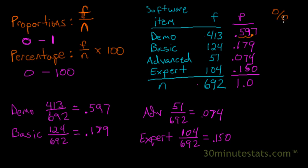So we can calculate our percentages here as 59.7% of our units sold were the demo version, almost 60%. Then we move the decimal place over, and we see that 17.9% of our units sold were the basic version. We can do the same thing with the advanced, and that was 7.4% of sales. And then we've got 15% for the expert version.